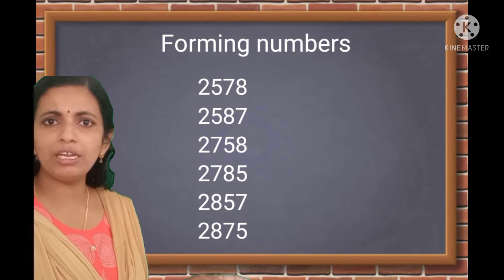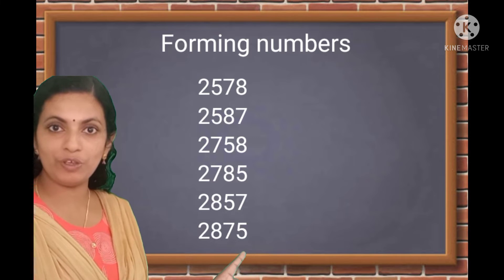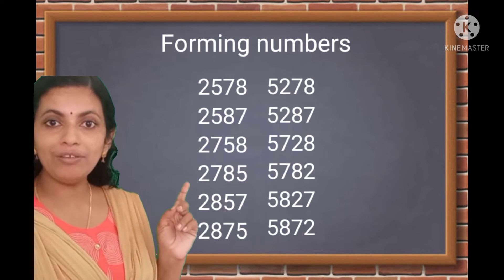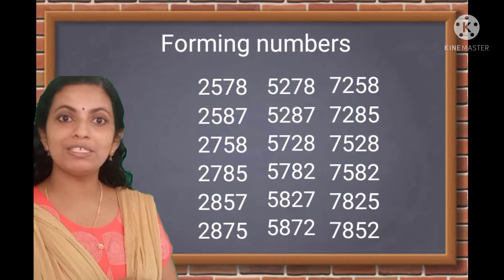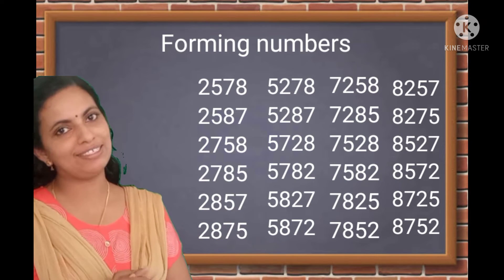Now, check how many numbers we got. By keeping 2 in the thousands place, we got six numbers. By keeping 5 in the thousands place also, we can get six numbers. And by keeping 7 and 8 in the thousands place, we can get six numbers each.